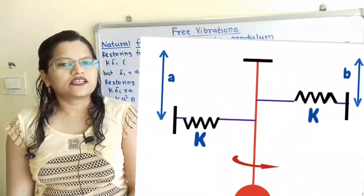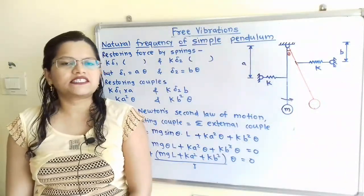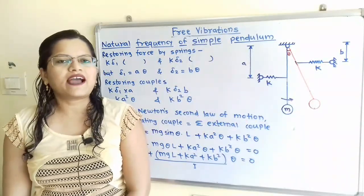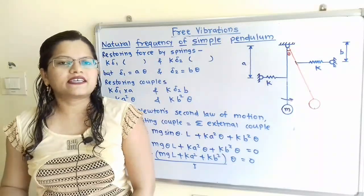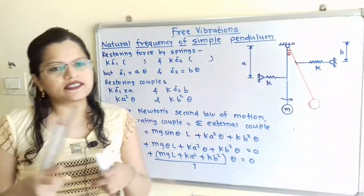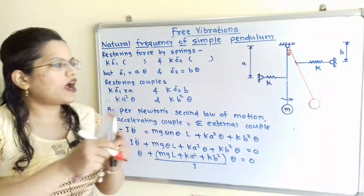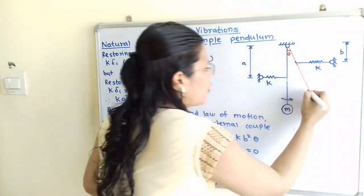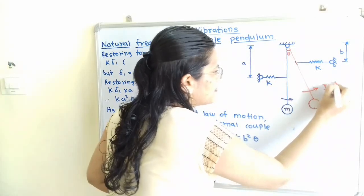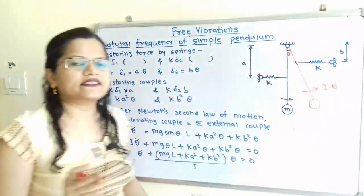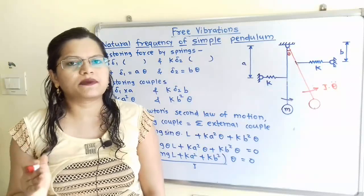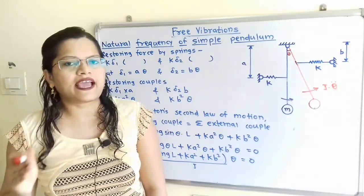Because here rotational motion is taking place with angular displacement theta, we have to show the accelerating torque that is getting generated in the same direction. This accelerating torque is equal to I times theta double dot, where I is the mass moment of inertia and theta double dot is the angular acceleration.